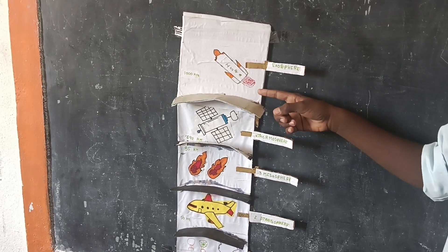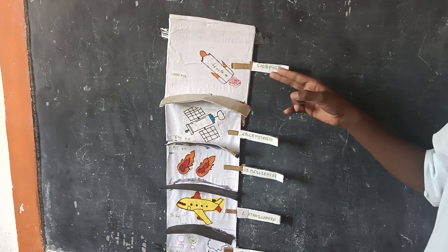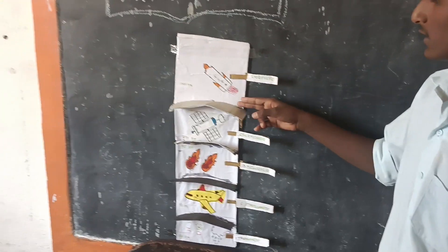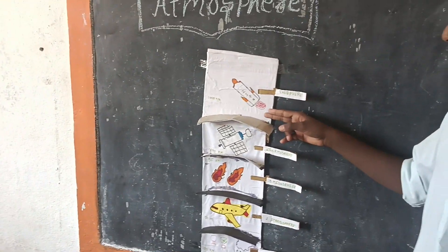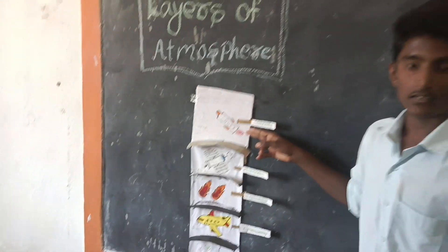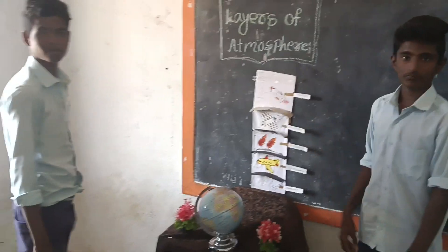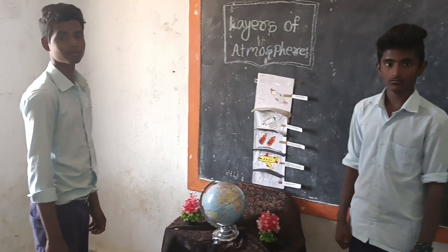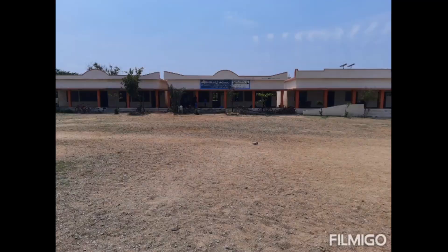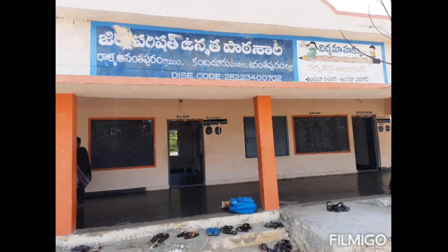Up to 1000 km surroundings of the earth is called exosphere. This is suitable for flying rockets and launching of satellites.